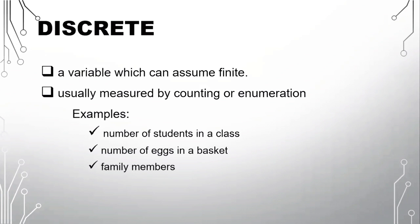In other words, discrete variable has countable number of possible values. So like the number of students in a class, we can count them as well as the number of eggs in a basket and the family members. So remember, discrete, it's countable.